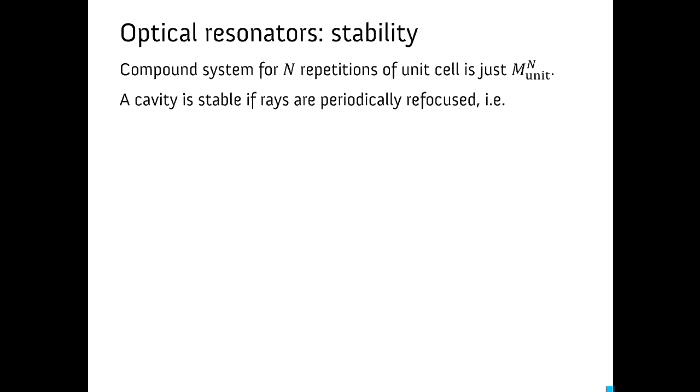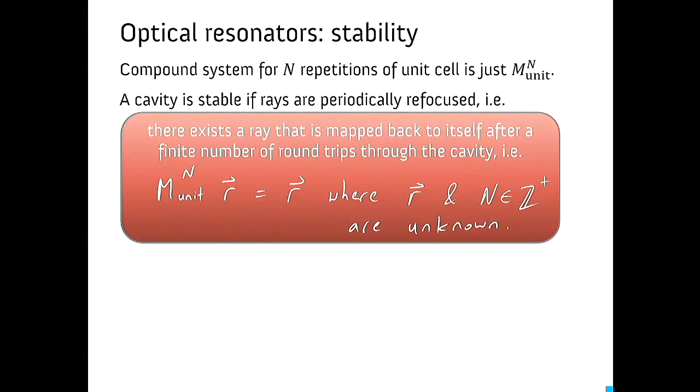So now we're ready to make a mathematical definition of what a stable cavity is, what it takes to trap light. If you go around the unit cell n times we know how to make the system matrix for that. We just raise the unit cell matrix to the nth power. And we're going to say that a cavity is stable if there exists a ray that's mapped back to itself after a finite number of round trips. So after some number of round trips, it doesn't care how long it takes, the ray is going to map back to itself. Mathematically this is described by this equation: the unit cell matrix multiplied by itself a lot of times acting on some ray is equal to that ray again.